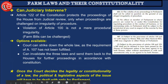Now, can the judiciary intervene? Article 122 of the Constitution protects the proceedings of the house from judicial review — but only when the proceedings are challenged on grounds of irregularity of procedure. However, if there was any constitutional irregularity, that can definitely be challenged for judicial review. The violation of Article 100 is not a mere procedural irregularity; it is a constitutional violation by the members of Rajya Sabha, and that is why the farm bills can be challenged.